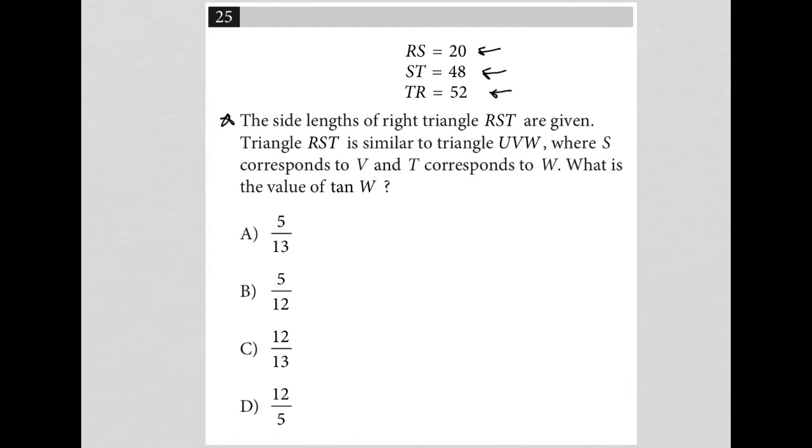Continues to say the side lengths of right triangle RST are given. Okay, so I'm going to use a little bit of plug-in picture here just so I have a visual of this. So, I know I have a right triangle. I also know that TR is my longest side, so that must be the hypotenuse. So, I have triangle RST.